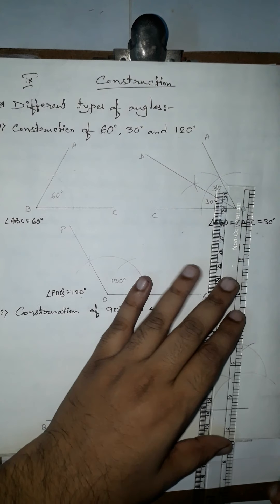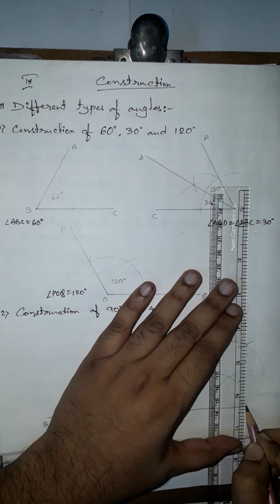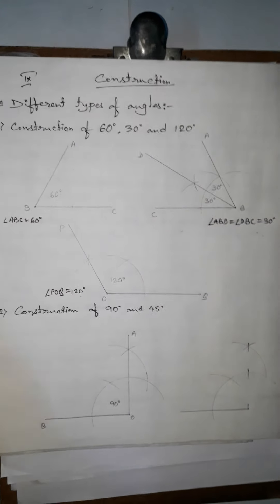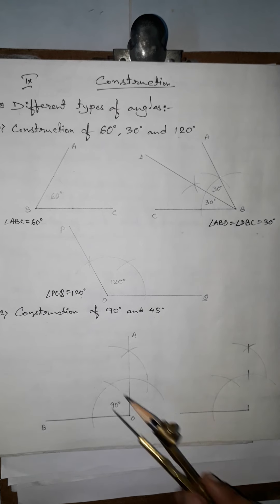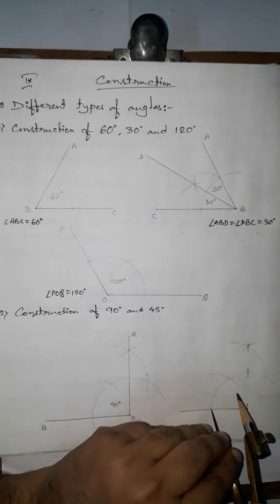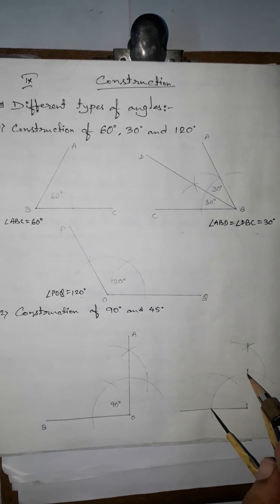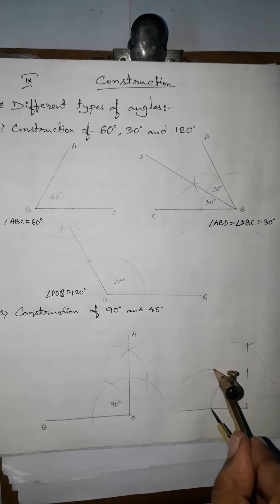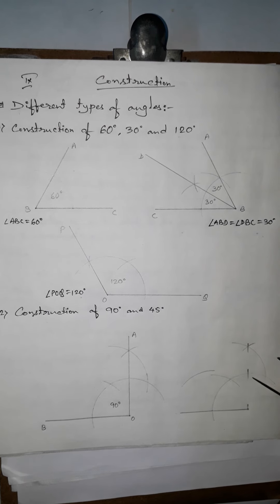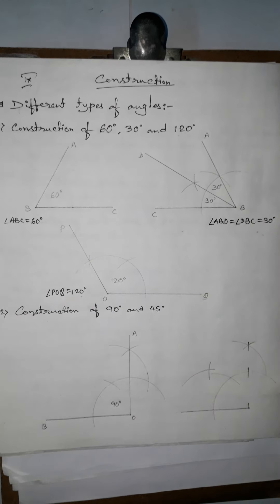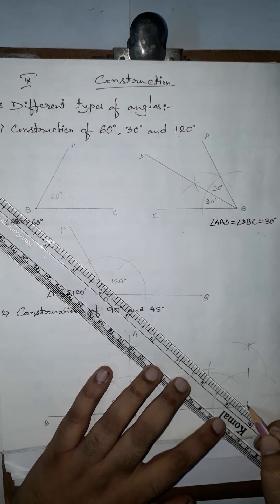Since only 45 degrees is needed, we just mark the three intersection points on the arc. We do not change the radius through all these arcs. Now to bisect, we measure more than half the distance between the two arc intersection points. We draw arcs from each of those intersection points, and they cross to give a new point.